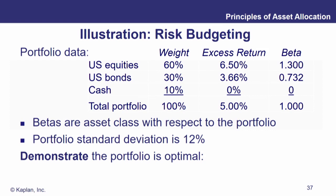Let's do an illustration. We have a portfolio with three asset classes — equities, bonds, and cash — with weights of 60%, 30%, and 10%. Their excess returns are given, with cash having an excess return of zero since it's our proxy for the risk-free asset. Bonds have a higher excess return, equities even higher, and their betas go correspondingly. The portfolio has a 5% expected excess return, a beta of 1, and a total portfolio standard deviation of 12%. We want to demonstrate using MCTR, ACTR, and the Sharpe ratio that the portfolio is optimal.